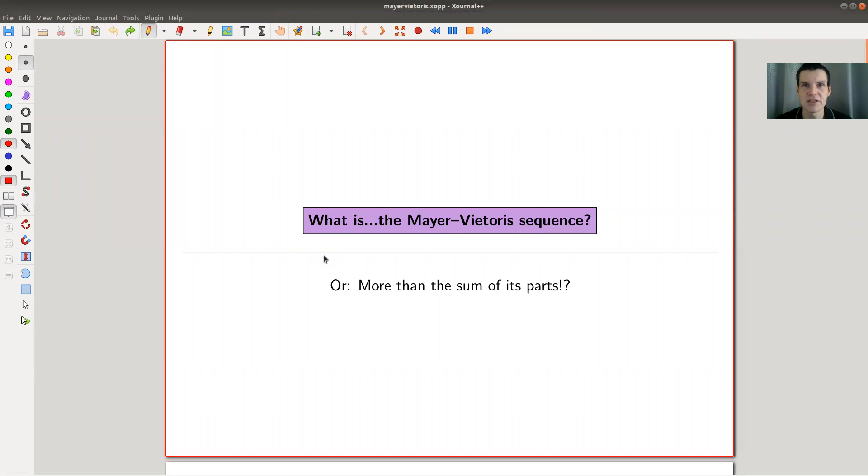Okay, welcome everyone to my continuation of what is algebraic topology. Today's topic is the Seifert-Van Kampen theorem, or the Seifert-Van Kampen theorem for homology, which usually is called the Mayer-Vietoris sequence. We'll see what that is actually.